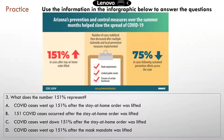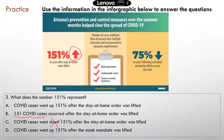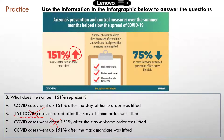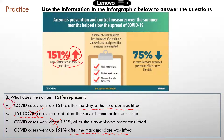Question three: what does the number 151% represent? Is it because cases went down? No — the arrow is pointing up, so C is not correct. Is it the absolute number of cases? No, there's a percentage sign, so 151 COVID cases is not right. A and D are similar, so let's look at the second half: COVID cases went up 151% after the stay-at-home order was lifted, or after the mask mandate was lifted. You can see it says after the stay-at-home order was lifted — so the correct answer is A.